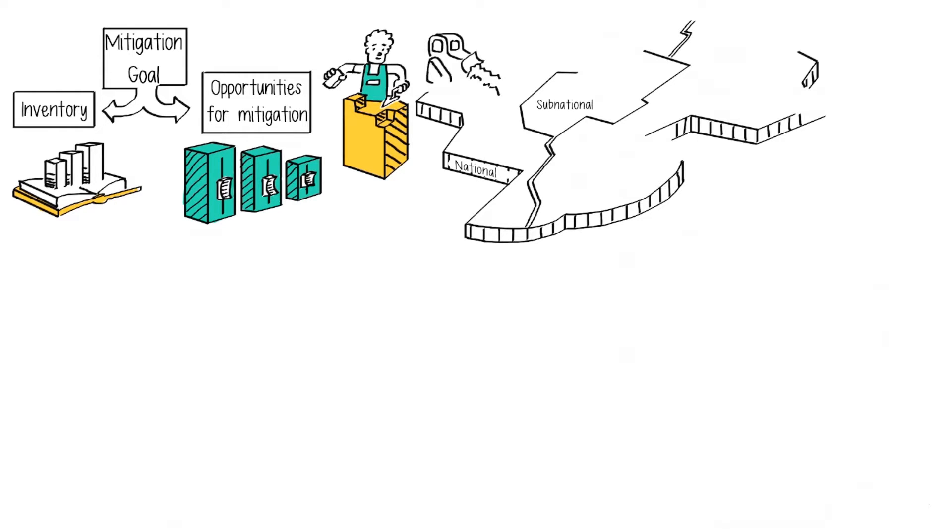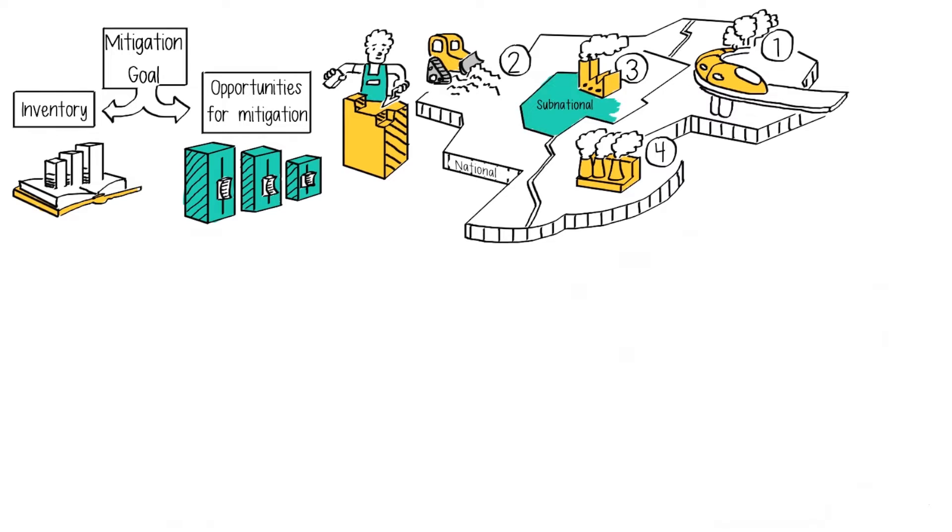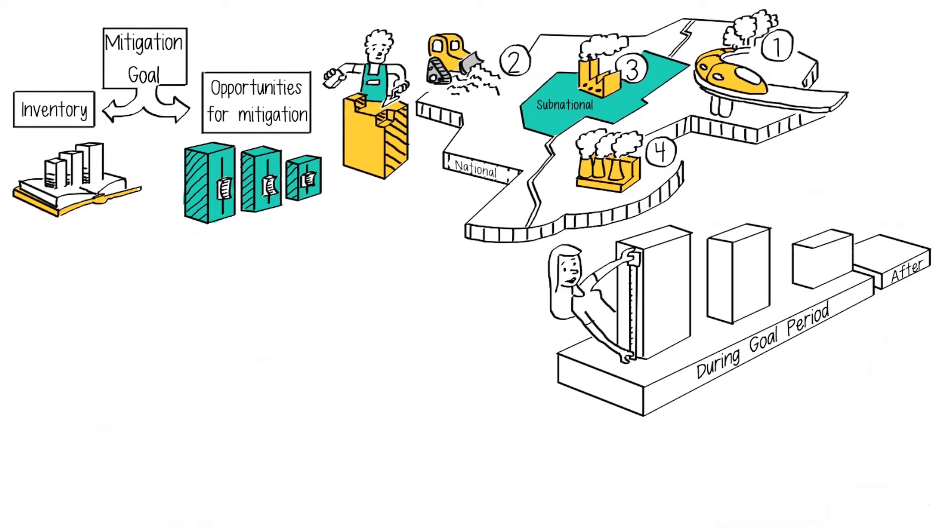The GHG inventories are needed to assess the GHG profile and identify mitigation opportunities by identifying high emitting sectors and prioritizing mitigation opportunities. The inventory is also needed during and after the goal period. During the goal period, the inventory is needed to track changes in GHG emissions and removals.